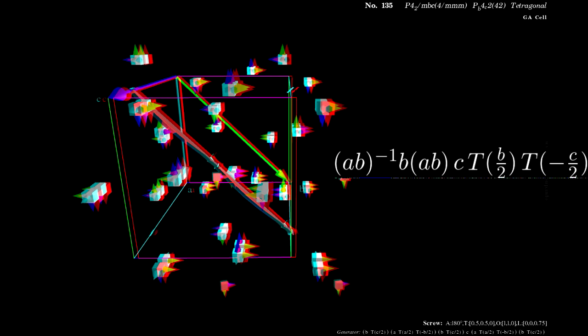The first one is a rotation around B by 180 degrees and two translations by half B and minus half C. It is generated by two reflection set hyperplanes perpendicular to AB inverse BAB and C.